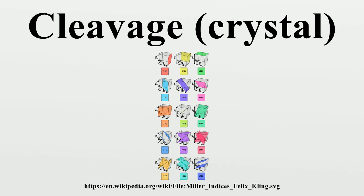Types of cleavage: Cleavage forms parallel to crystallographic planes. Basal or pinacoidal cleavage occurs when there is only one cleavage plane. Graphite has basal cleavage. Mica also has basal cleavage. This is why mica can be peeled into thin sheets.